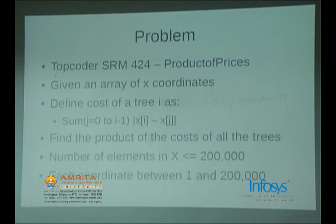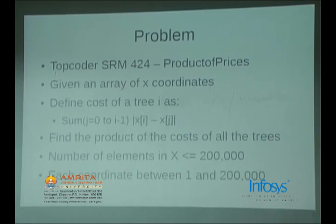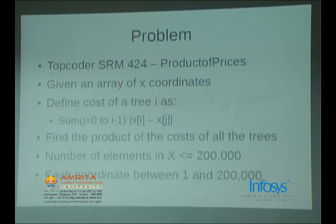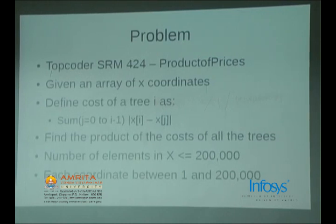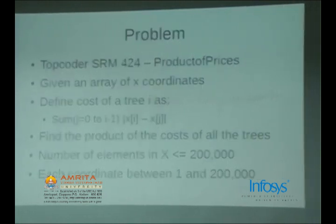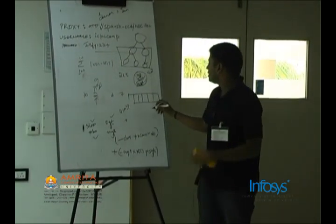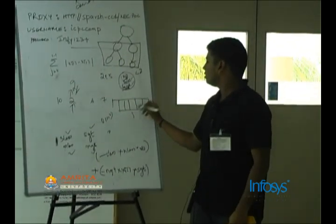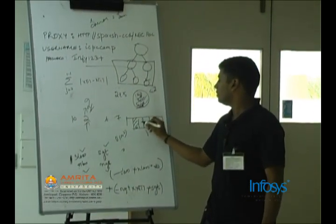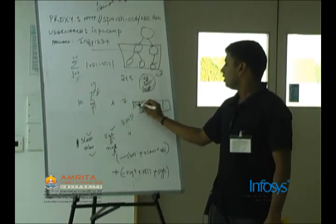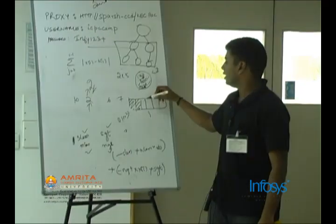Is everyone clear with that formulation — how we remove the modulus? The rule of thumb is: when you have a modulus, divide into 'greater than' and 'less than' cases and remove it. Then you need to efficiently maintain running sums and counts as you iterate through the array.